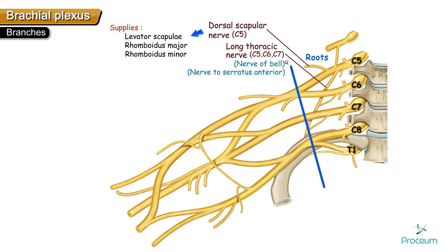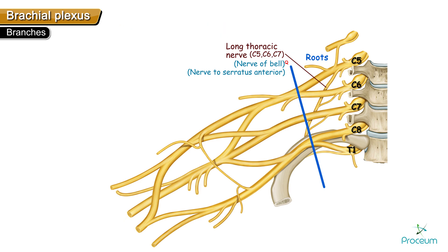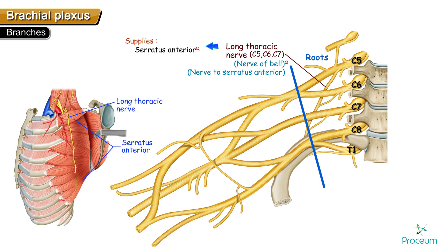The dorsal scapular nerve supplies the muscles attached to the dorsal side of the medial border of the scapula: the levator scapulae, rhomboid major, and rhomboid minor. The long thoracic nerve — also called the nerve of Bell or nerve to serratus anterior — arises from roots C5, C6, and C7, and it supplies the serratus anterior muscle, which inserts on the costal surface of the medial border of the scapula.